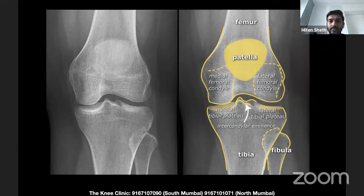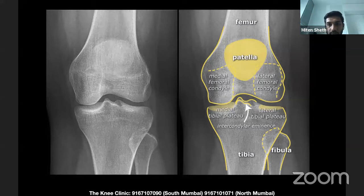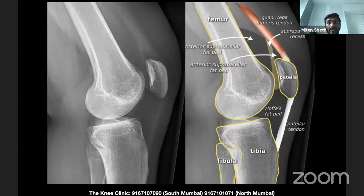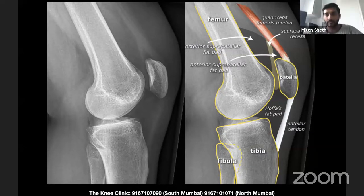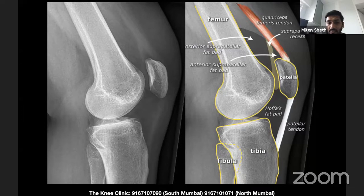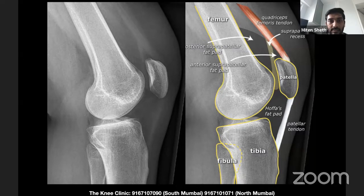On the femoral side we're looking at the medial femoral condyle and the lateral femoral condyle, the medial tibial plateau and the lateral tibial plateau. On the tibial side there's something in the center apart from these two plateaus — we call that the intercondylar area, or the intercondylar eminence. On the lateral X-ray we look at the patella, femur, and tibia, including the patellar tendon extending to the tibial tuberosity and the quadriceps femoris tendon extending superior to the patella.